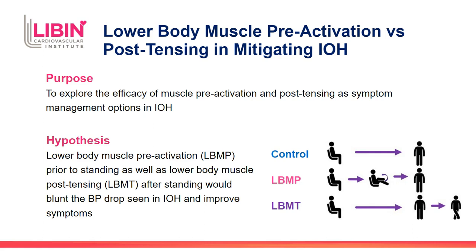Participants were instrumented with a 5-lead ECG, non-invasive arterial blood pressure finger cuff, and brachial arm blood pressure cuff. In addition, Vanderbilt Orthostatic Symptom scores (VOS) were recorded immediately upon standing. This symptom rating used a scale of 0 to 10, where 0 reflected an absence of symptoms. Patients were asked to rate the severity of 9 symptoms including mental clouding, blurred vision, shortness of breath, rapid heartbeat, tremulousness, chest discomfort, headache, lightheadedness, and nausea, with the sum of these scores used as a measure of symptom burden.